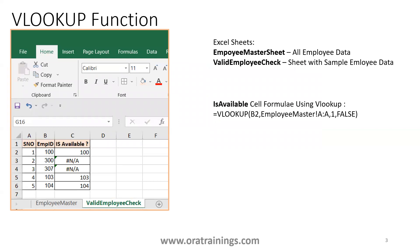Here's a sample Excel sheet with two sheets. The first is the employee master, which has all employee data. The second sheet has a few sample employee records. I want to check whether a specified employee ID exists in the master sheet. Using VLOOKUP, I reference cell B2 as the lookup value, then 'employee master'!A:A as the range — just the employee ID column — then column index 1, and false for exact match.